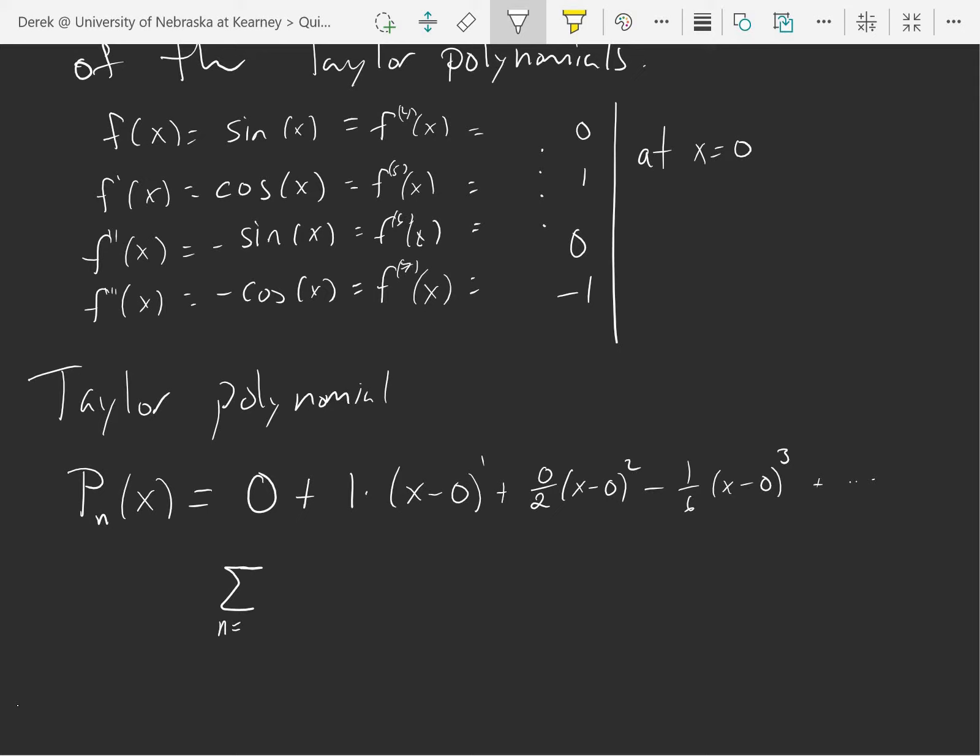Sorry, k equals zero. If I want the degree n guy, floor of n over two. Okay, and then I'm going to take negative one to the k divided by, well I want the odd exponent guys, so 2k plus one.